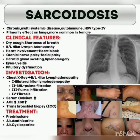The investigation of choice is transbronchial biopsy. Treatment of sarcoidosis is prednisolone; alternatives include azathioprine or cyclosporine.